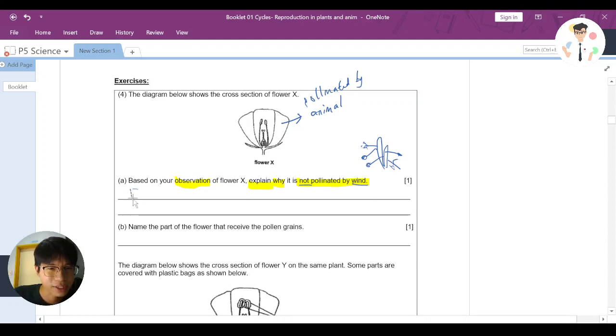So to explain why it is not pollinated by wind, you can say: It's because the stigma and anther of the flower are not sticking out or hanging out of the flower. It needs to be hanging out of the flower so it will be easy to carry by wind.